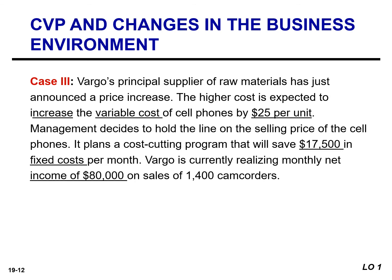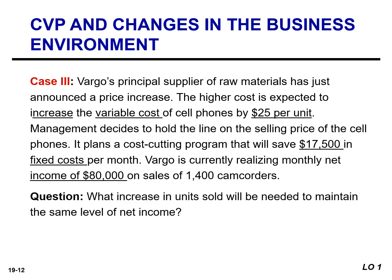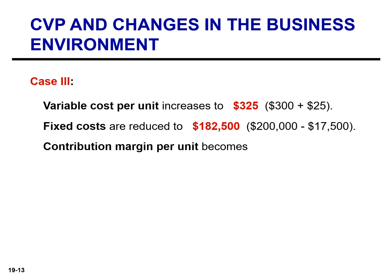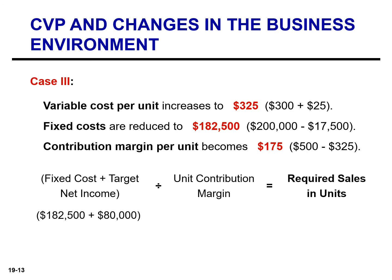In this last scenario, variable cost increases by $25 per unit, the selling price remains the same, and fixed costs are reduced by $17,500. At this level of activity, Vargo is generating $80,000 of income. The variable cost per unit increases to $325, fixed costs are reduced to $182,500, and because of the change in variable cost, the unit contribution margin becomes $175. To achieve a target net income of $80,000, Vargo must sell 1,500 cell phones, which is an increase of 100 units.